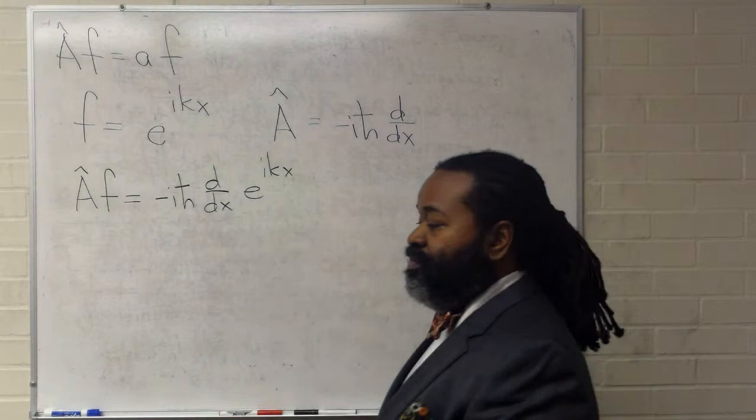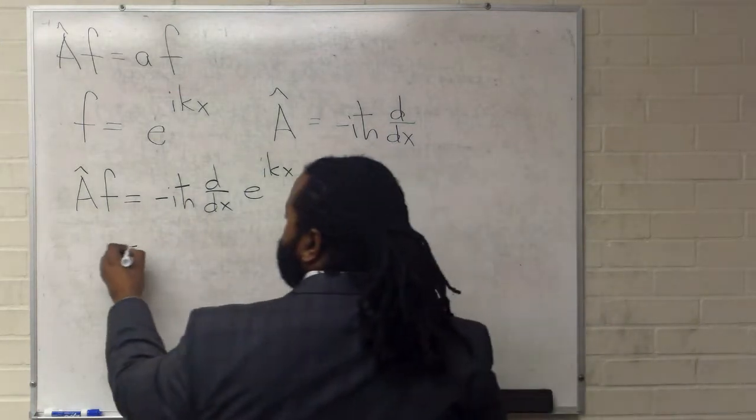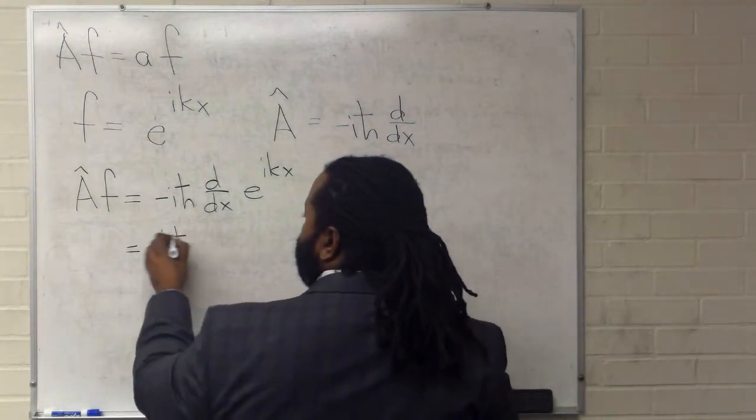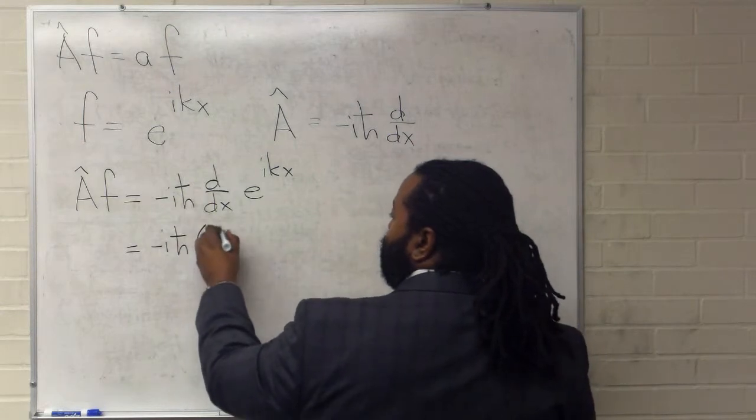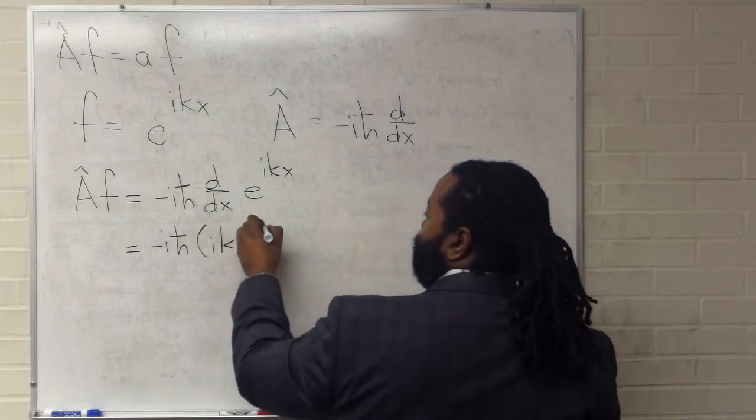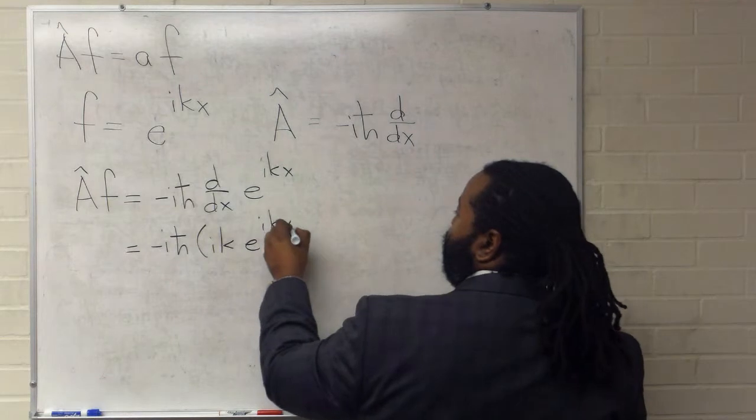We'll have to take the first derivative of this quantity. This is going to give us minus i h-bar times i k e to the ikx.